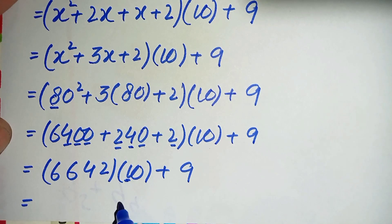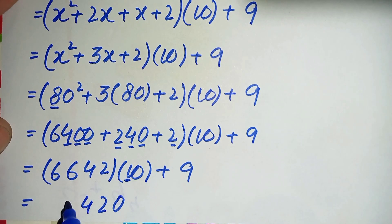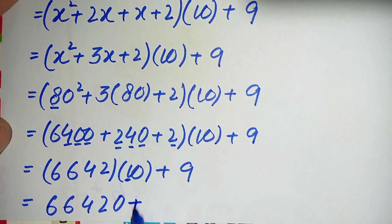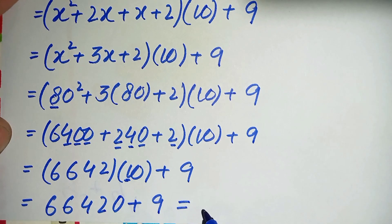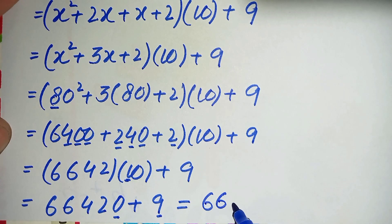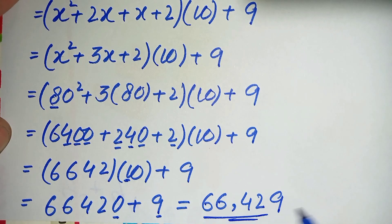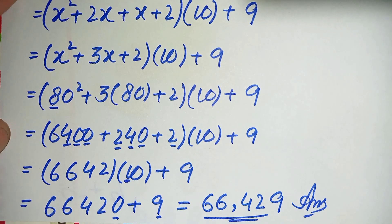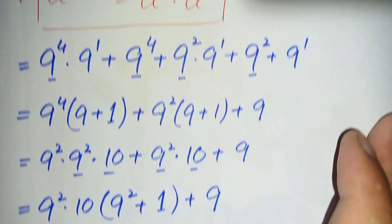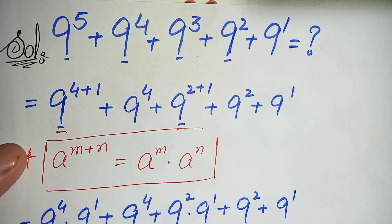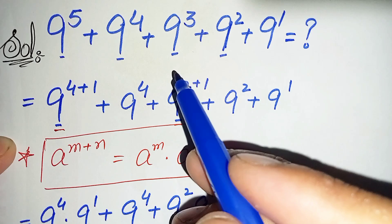Multiplying by 10: 0 times this number is 0 and 1 times this number is the number itself, so 6642 times 10 is 66420. Then adding 9: 66420 plus 9 equals 66429. So our answer and the value of this nice and interesting exponential equation is 66,429.